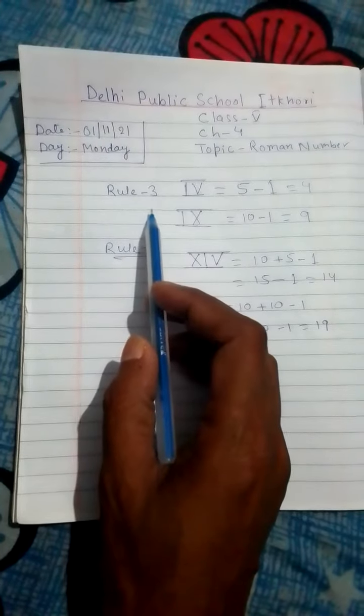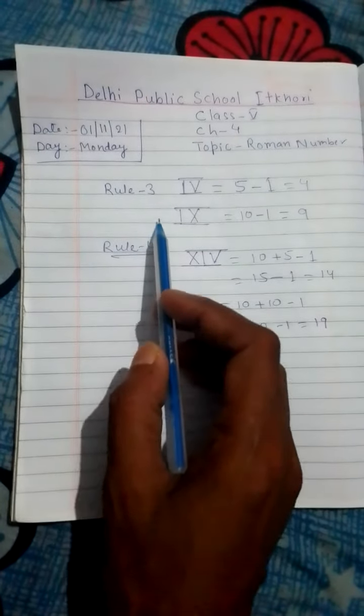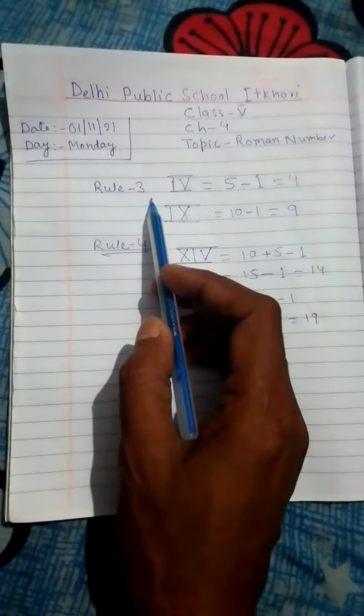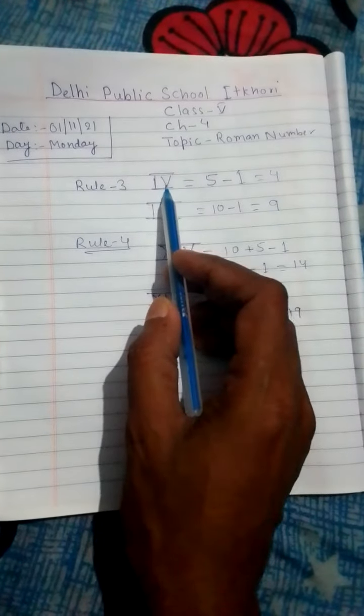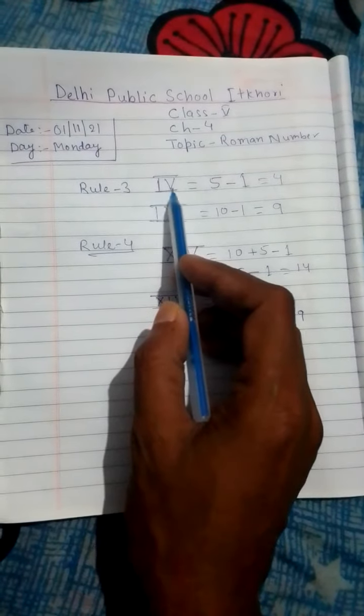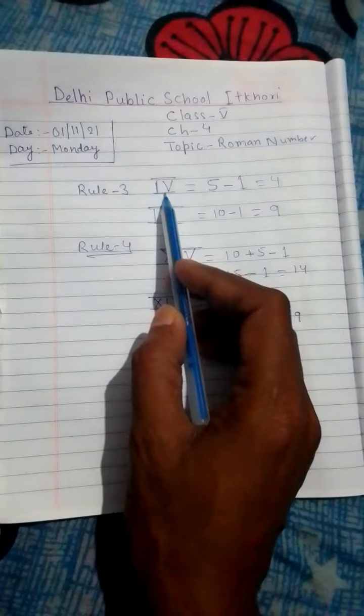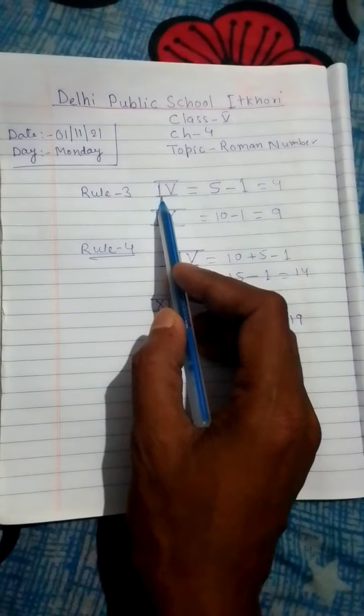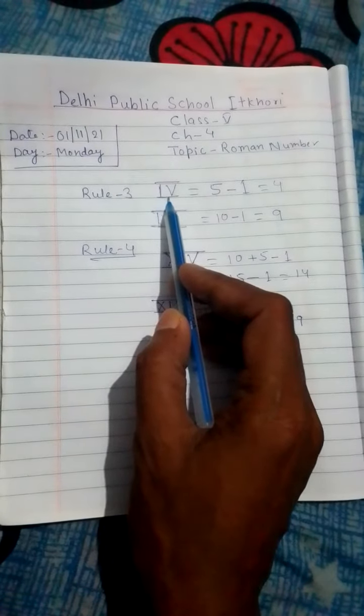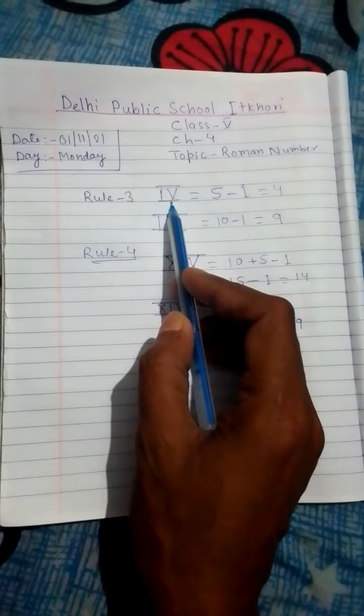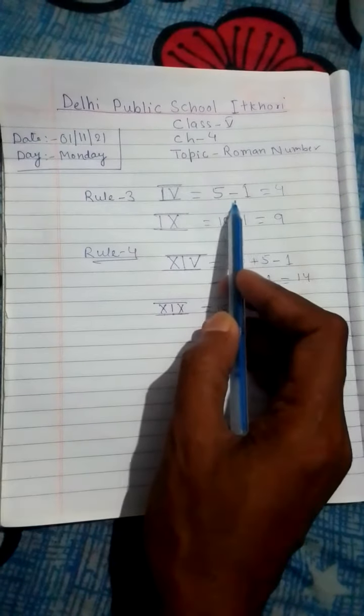am discussing rule number third and fourth. Now rule number third: if there are two symbols from the Roman, and the smaller symbol is left side of the bigger symbol, then there will be subtraction.